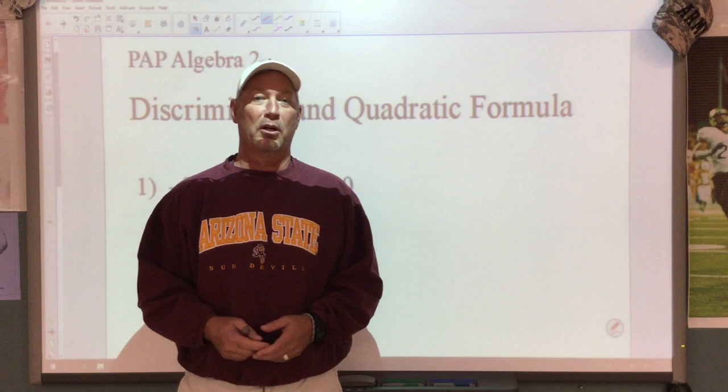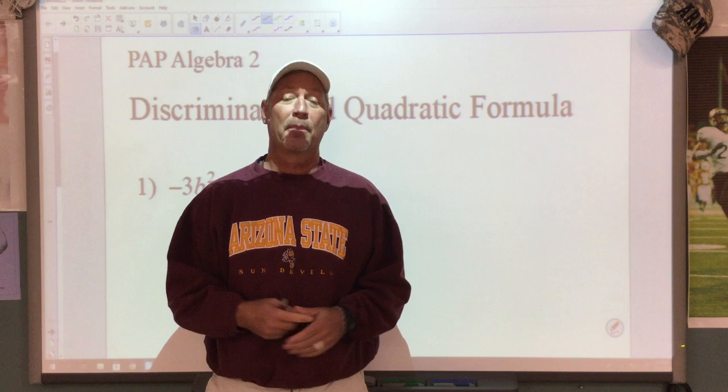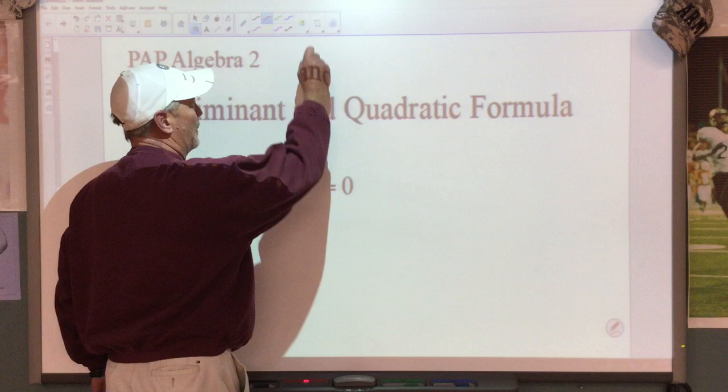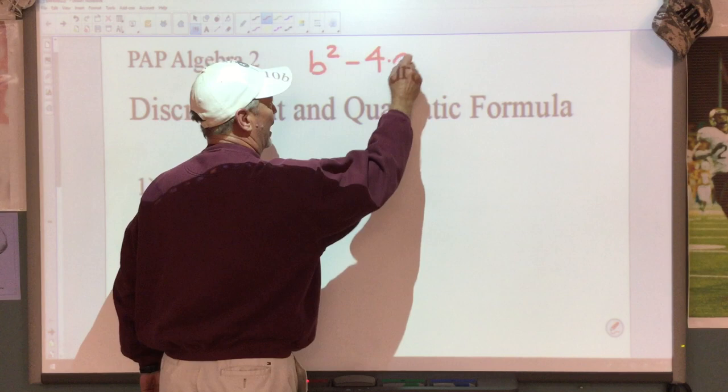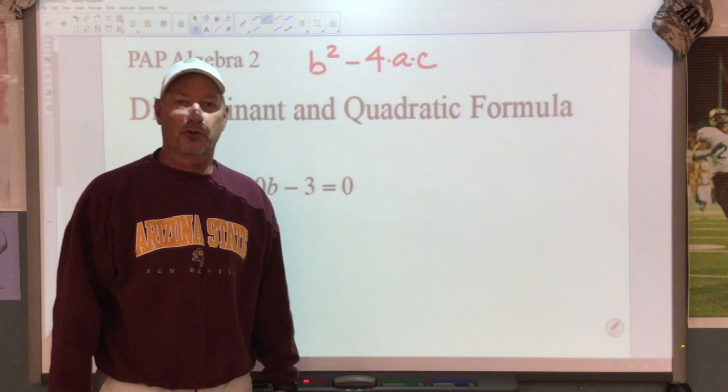Hey, it's Coach Rees. Today we're going to talk about the discriminant and solving quadratic equations with the quadratic formula. First, the discriminant. We have a formula for the discriminant: B squared minus 4 times A times C. That's how you're going to find the value of your discriminant.